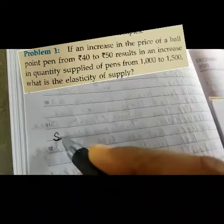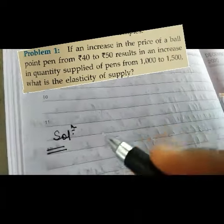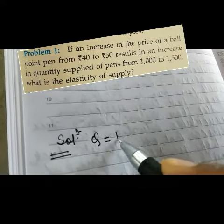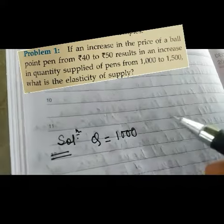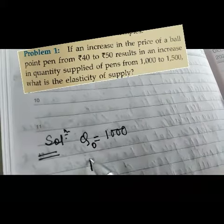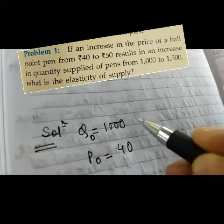Class, the numericals. You can see the question above. The numerical says that quantity was 1000, and P0 or the price was 40.